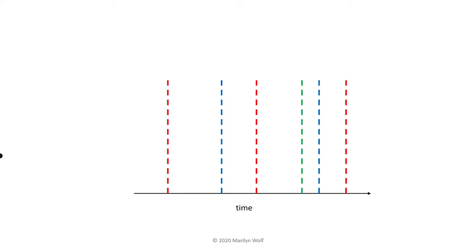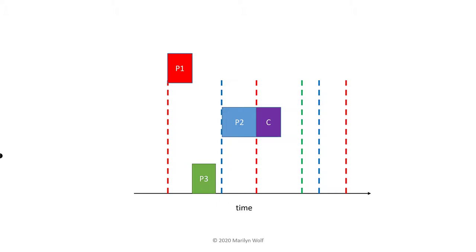The CPU is not the only resource that the scheduler needs to take into account. Contention for other resources can cause a problem known as priority inversion. Here's a timeline with some tasks: P1 is the highest priority task, P3 is a low priority task, and P2 has an intermediate priority. During part of its execution, P2 uses the shared resource C, which is protected by a semaphore. The semaphore ensures that only one task at a time can use C. Now consider an example in which P1 wants to make use of C during its next execution.